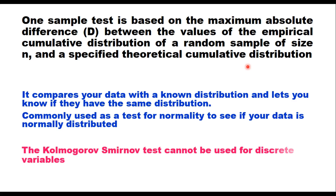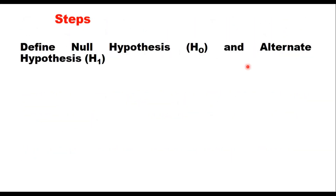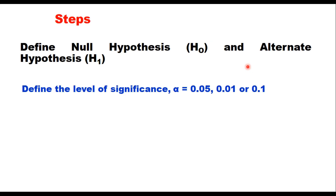The KS test cannot be used for discrete variables and it is a four-step process. The first step, as usual, is to define the null hypothesis and alternate hypothesis. The null hypothesis is generally taken as the data follow a particular distribution, and the alternate hypothesis is that the data do not follow that distribution. Then define the level of significance alpha — it can be 0.05, 0.01, or 0.1.